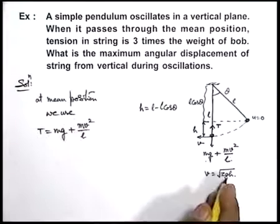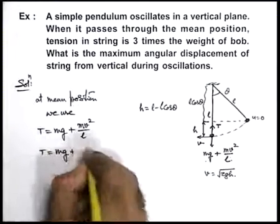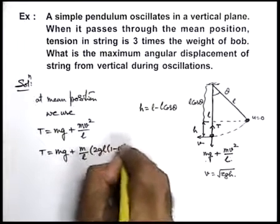Here if we substitute the value of v, we'll get T is equal to m-g plus m by l into 2 g l, 1 minus cos theta.